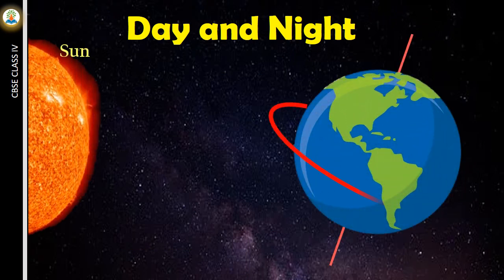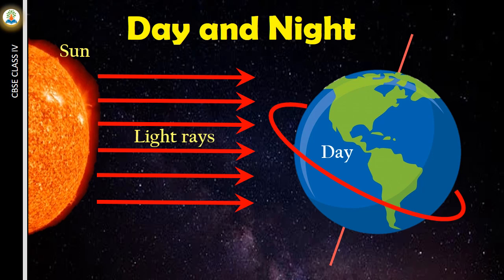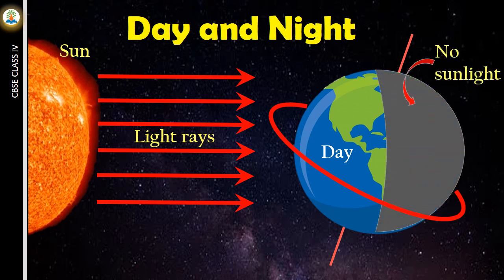When Earth rotates on its axis, one side of Earth faces the sun while the other half is away from the sun. The side of Earth towards the sun receives light and thus it is day in this part of Earth. The part of Earth which is away from sun does not receive sunlight and there is darkness in this part of Earth.